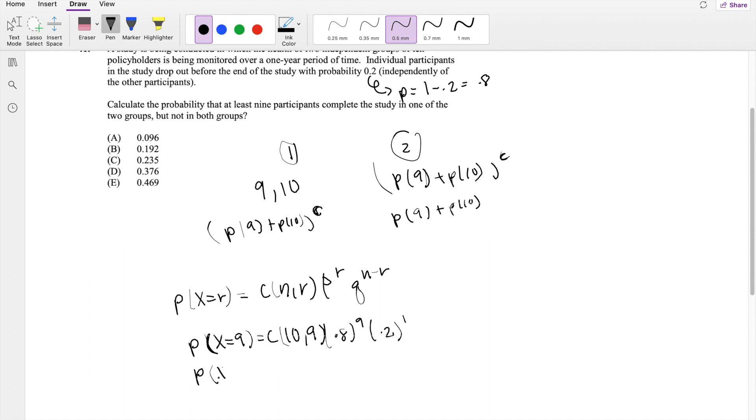Okay. And then, how about when X is equal to 10? So what if everyone completes the study? Then that's equal to 10 choose 10, 0.8 to the 10, and 0.2 to the 0, which is just equal to 0.8 to the 10. This one, however, is just equal to 10 times 0.8 to the 9 times 0.2. So adding the probability of 9 and 10 together, you get this is equal to 0.3758.